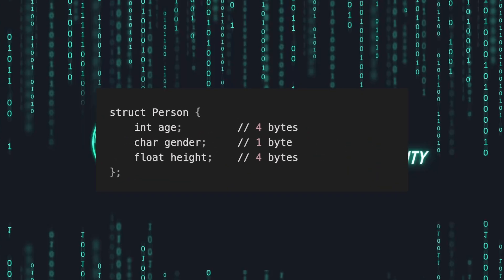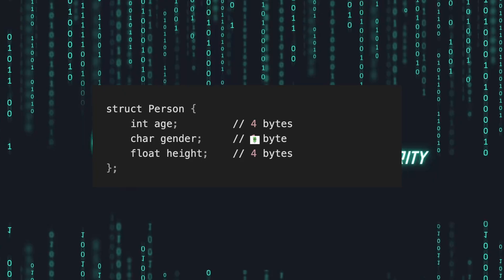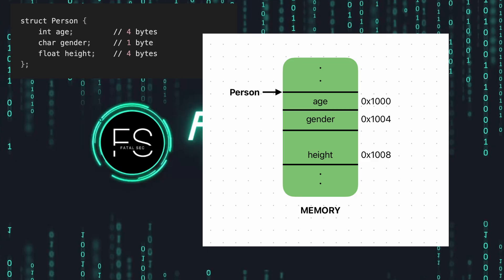Here we have a structure of a person with three fields: int age, character gender, and float height. In memory, this will be represented something like this. When a program is executed, the operating system's loader takes charge of loading the binary into memory. During this process, it allocates memory for global variables, stack frames, heap allocations, and any structures used in the program. A struct in C is simply a continuous block of memory — all its members are laid out one after another, and the structure's own address is the same as the address of its first member.